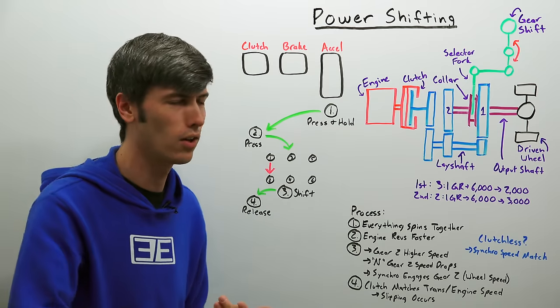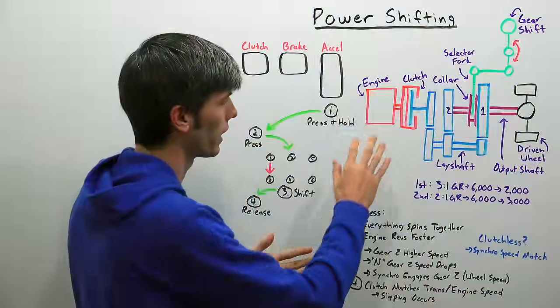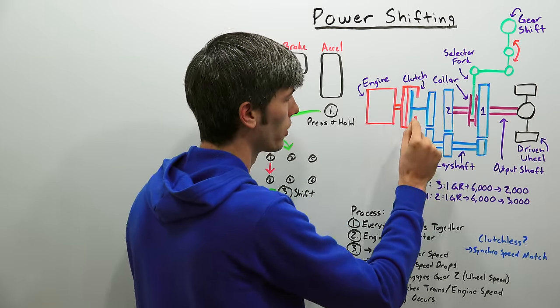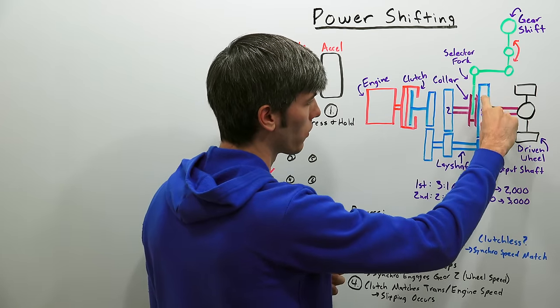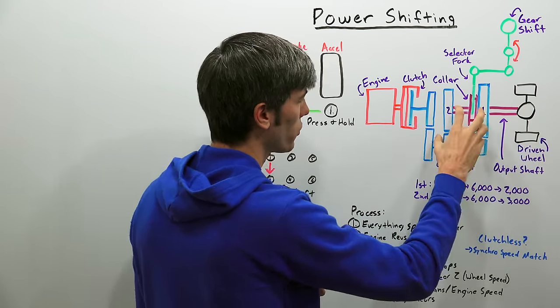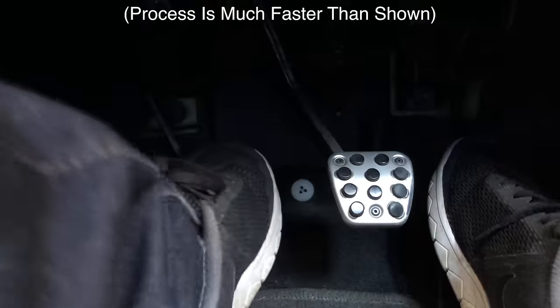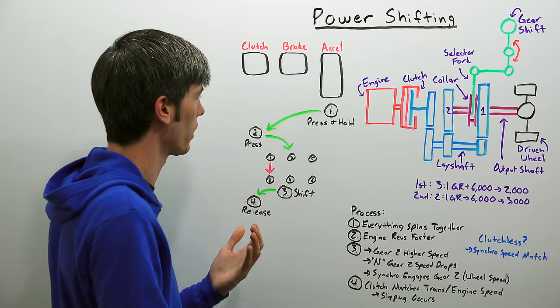And when you're in first gear and you're flooring it everything here is synchronized, everything is rotating together because everything is fully connected, your clutch is fully engaged, your selector fork you've got it in first gear so your wheel speed matches your transmission speed matches your engine speed. Now the second thing we do is we press in the clutch so you're leaving your foot down on the accelerator pedal, you press in the clutch.